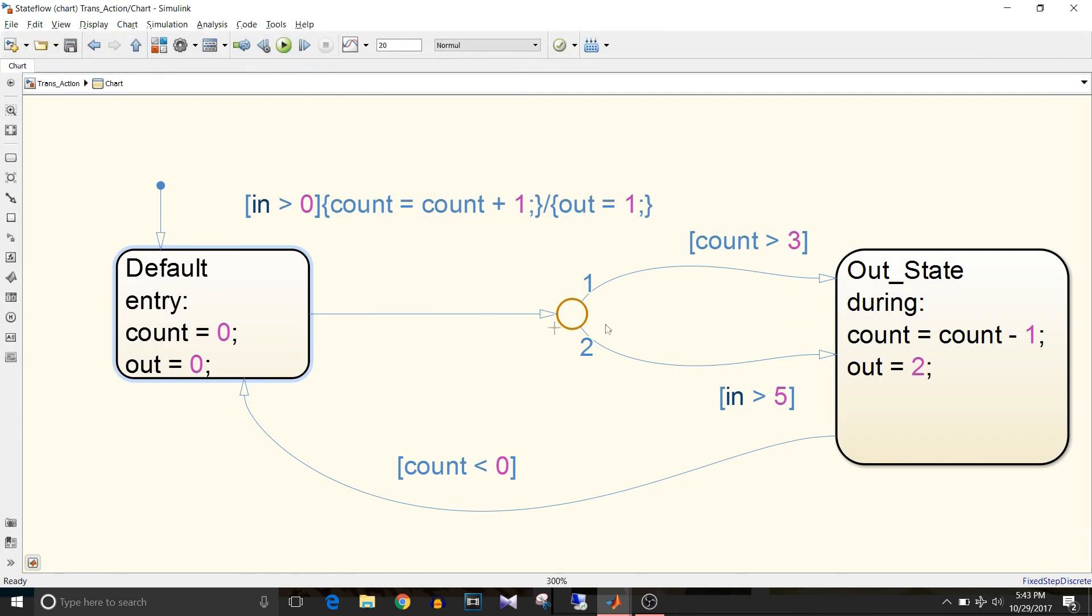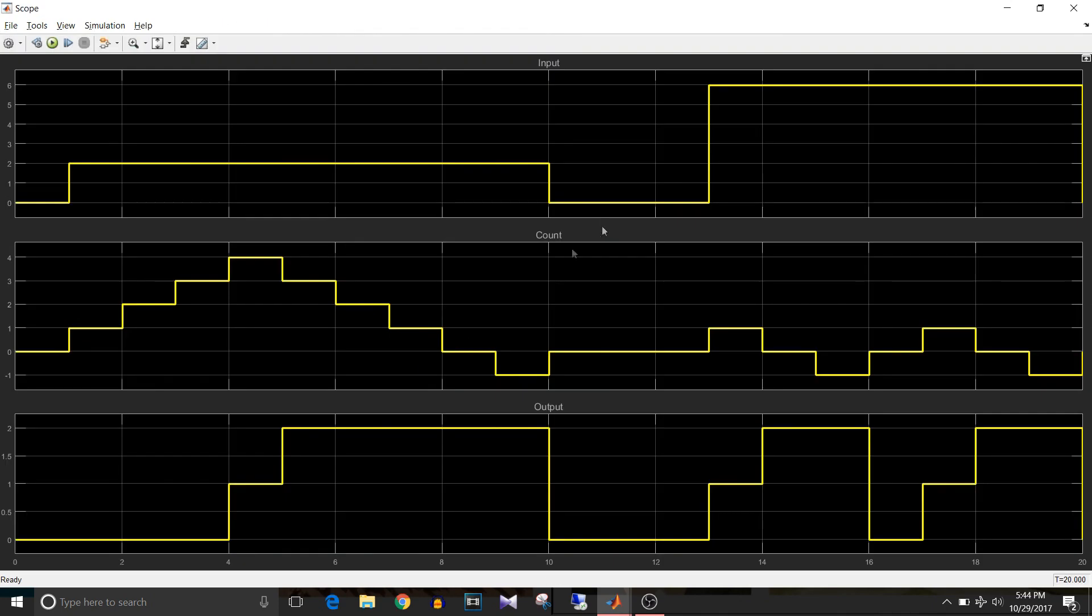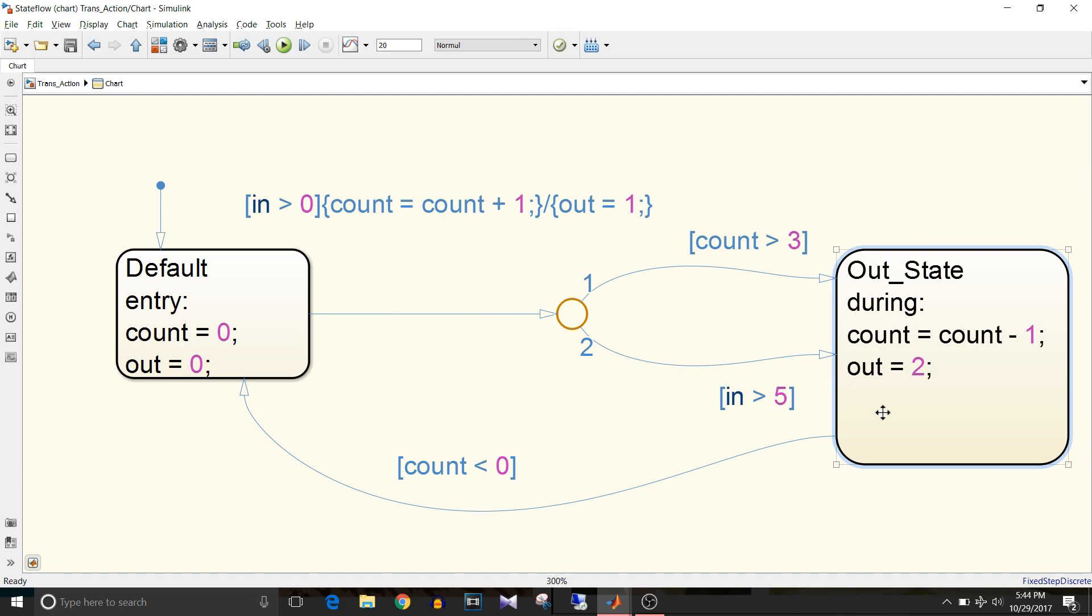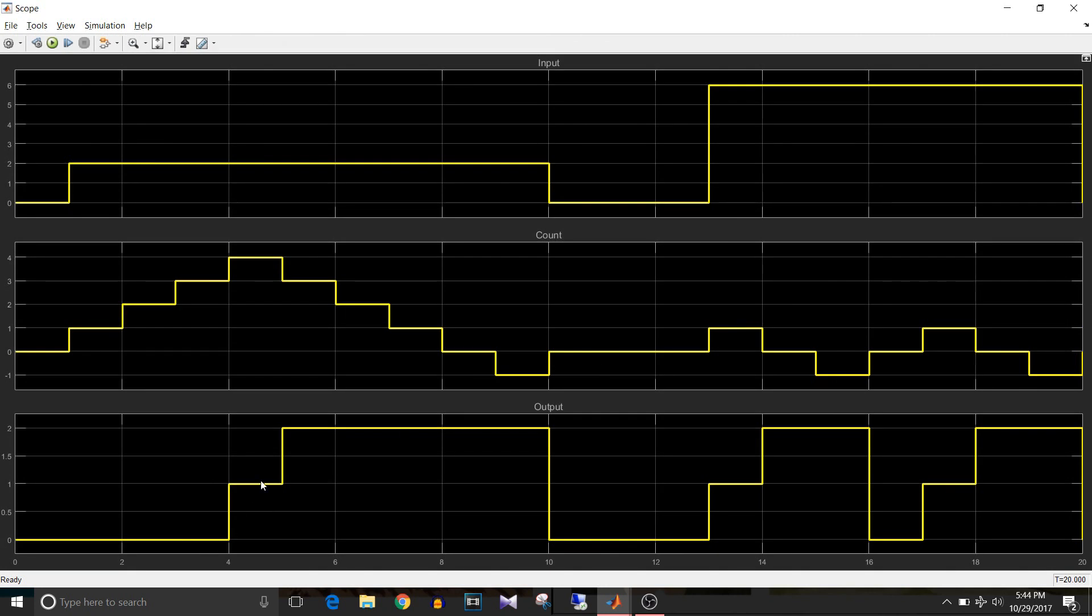The transition action will take place because this path, that is this input greater than 0 condition action and this first path that is count greater than 3, completes the path from default to out state. The output equal to 1 transition action takes place and the out state becomes active. Since there is no entry action, we have this transition action output equal to 1.